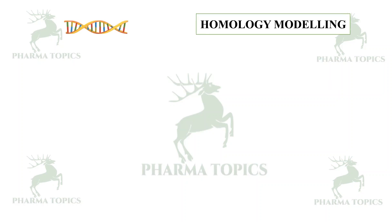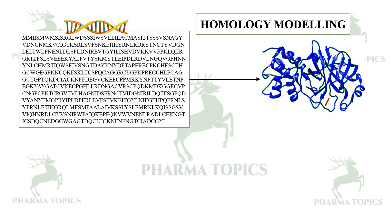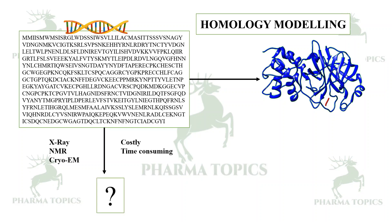So what is homology modeling? You have a DNA sequence, a particular gene, and you get a sequence out of it based on the codons. If you want to model this protein — this is basically a primary structure — what about the secondary, tertiary, or quaternary structure? When you want to build it, you need it to work for molecular docking or other computational methods. There are some techniques like X-ray, NMR, or cryo-electron microscopy, but these methods are costly and time-consuming.